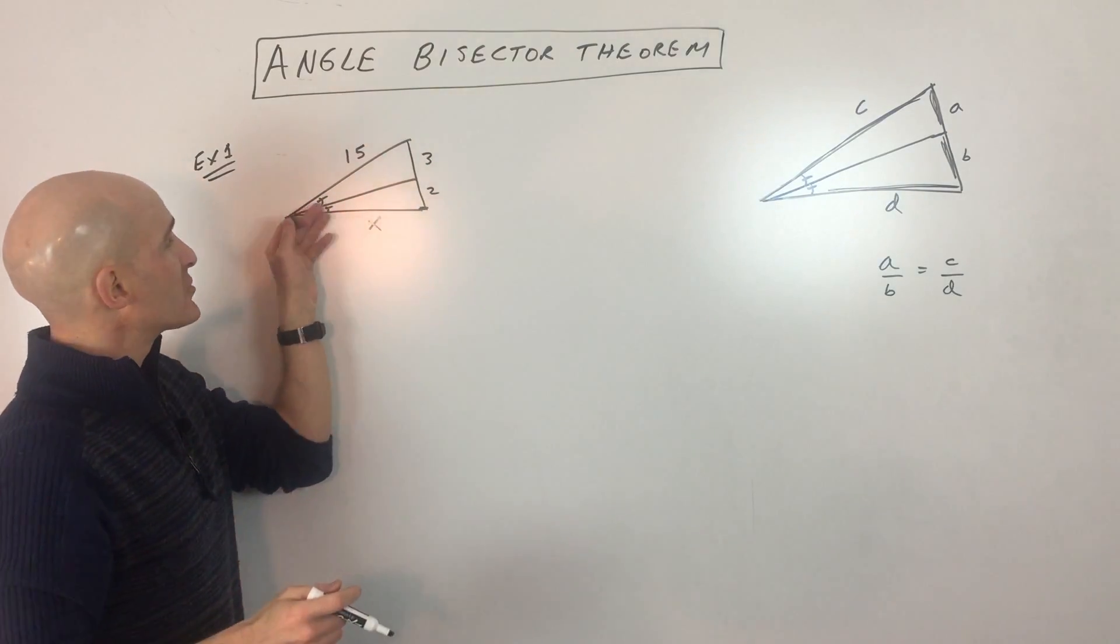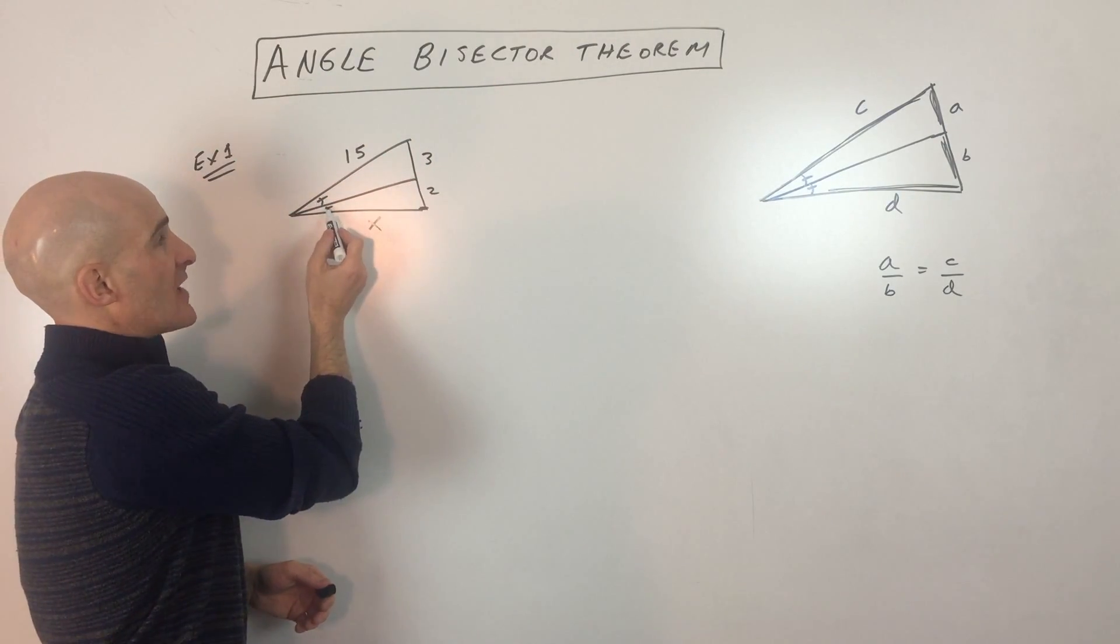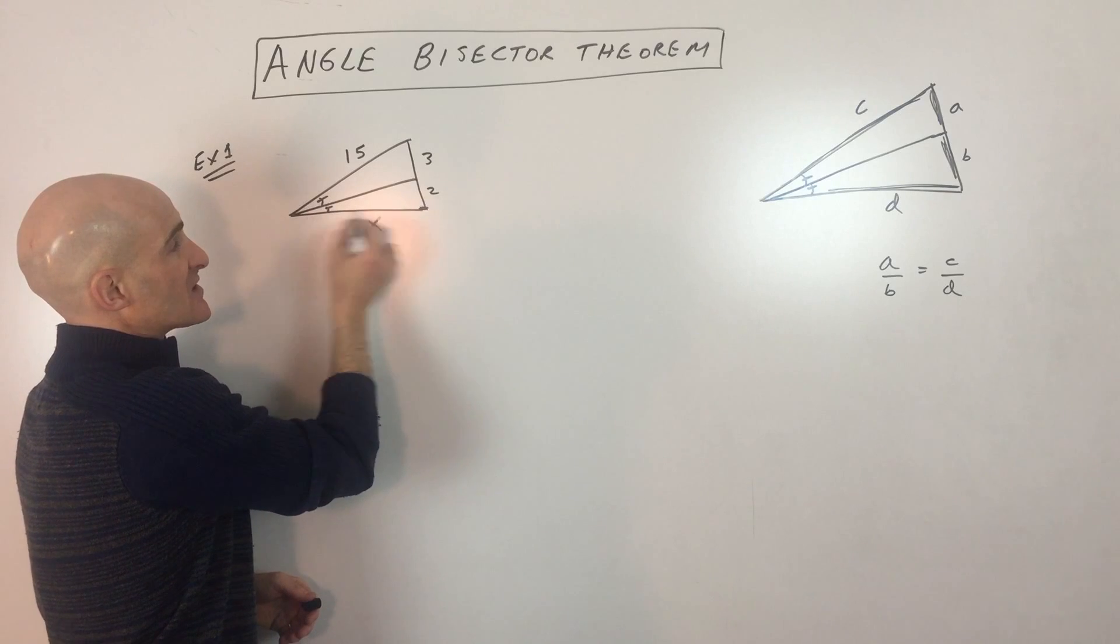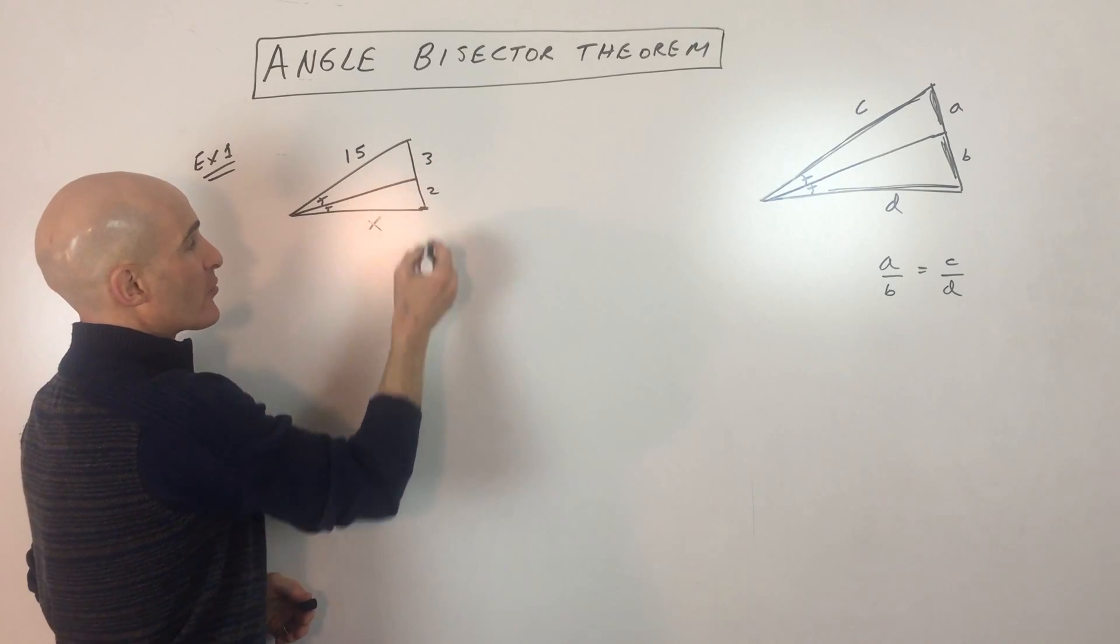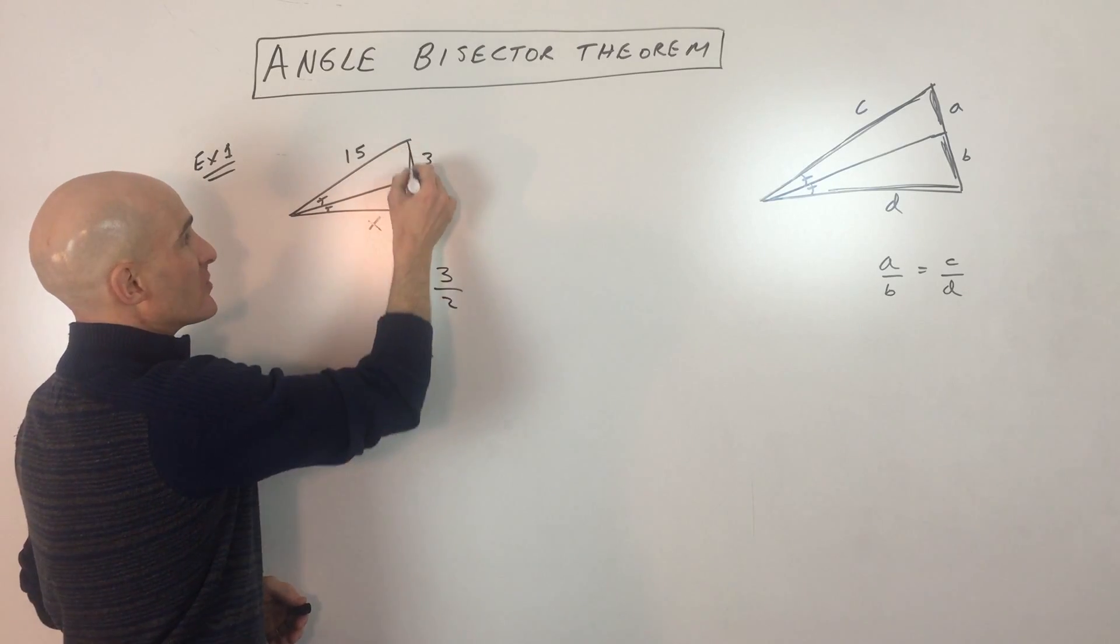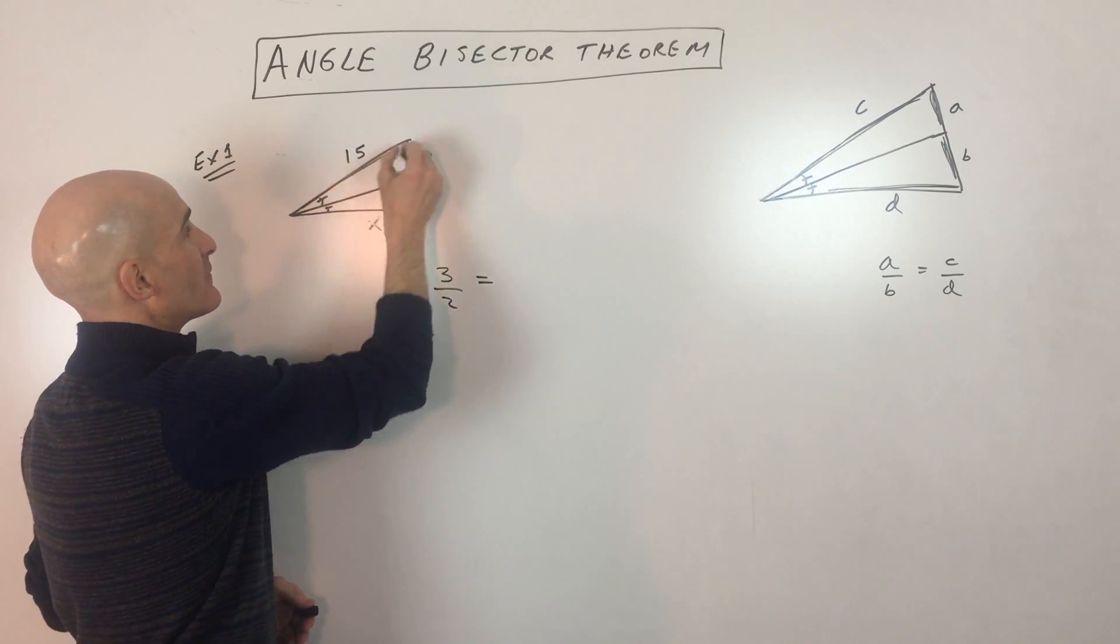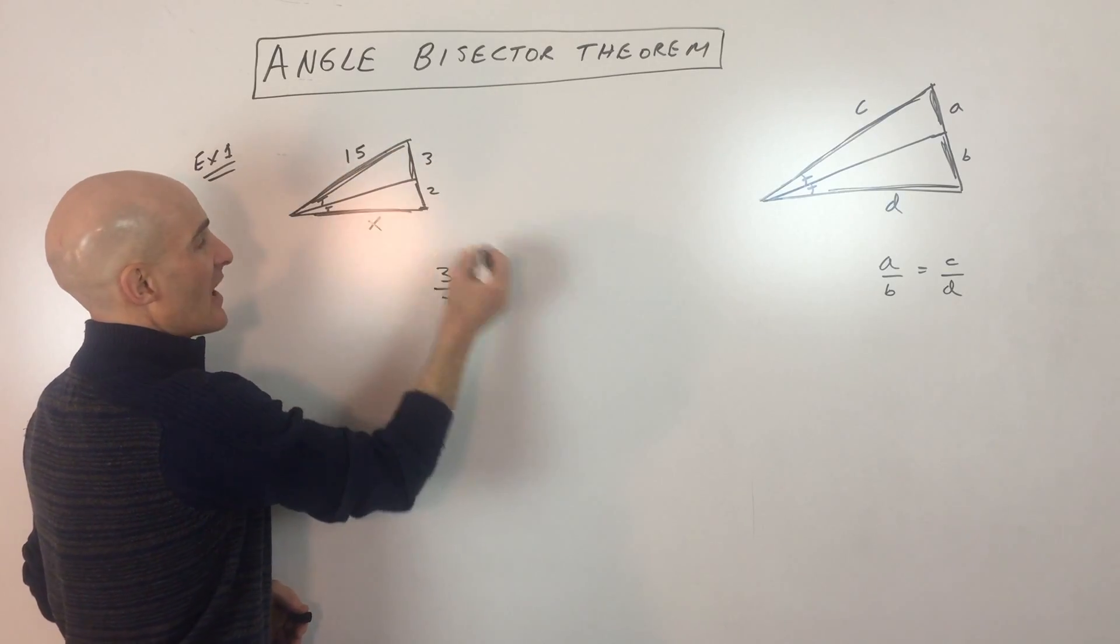So here we've got a triangle. Here's our angle bisector. You can see that these are the same. So we want to solve for this missing side, X. So the ratio of 3 to 2, this piece to this piece, is the same as 15 is to X.